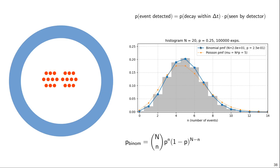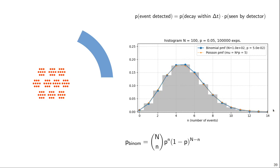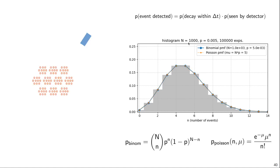Going back and forth, the distribution gets a bit wider since there is a small probability of detecting more events, though with p equals 0.05 it's very unlikely to detect 100 events. Going further — n equals 1000 and p equals 0.005, still n times p equals 5 — the distribution gets even wider. Interestingly, I've now shown not only the binomial distribution in blue but also another distribution in orange dots and a dashed line. In this case there is no visible difference between the blue and orange curves.